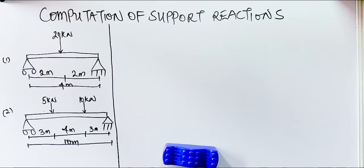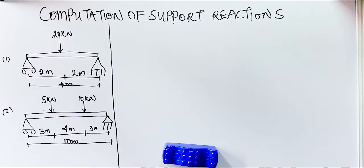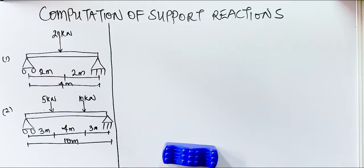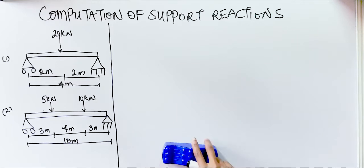Welcome to another Knowledge Field Chi analysis lesson. This topic is the computation of support reactions — I'm going to teach you how to compute support reactions, which includes how to take moments. We have two questions here: the first diagram involves a point load and the second involves two point loads. We'll start with the one with one point load.